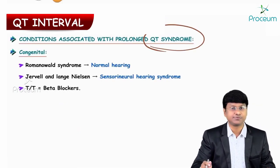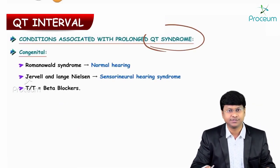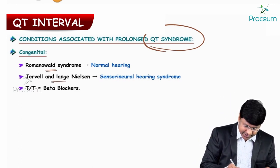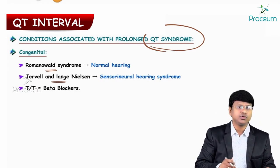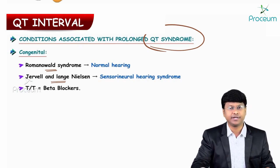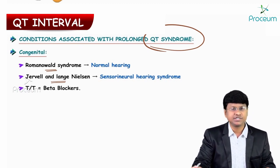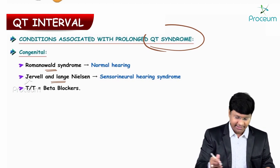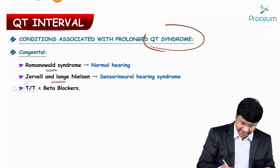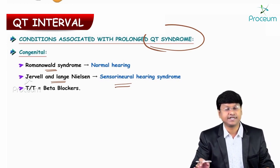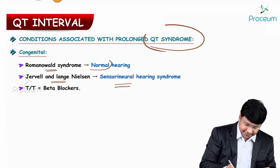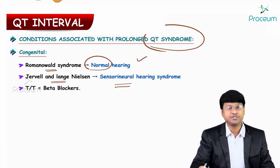What are the congenital causes for prolonged QT syndrome? One is Romano-Ward syndrome and the other is Jervell and Lange-Nielsen syndrome. In both conditions there is prolonged QT interval, but an additional feature of Jervell and Lange-Nielsen syndrome is sensorineural hearing loss, whereas in Romano-Ward syndrome the individual has normal hearing.